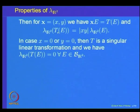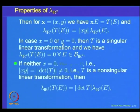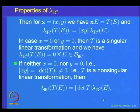If neither x nor y is 0, then the determinant is nonzero and T is non-singular. Let us look at these facts more carefully.